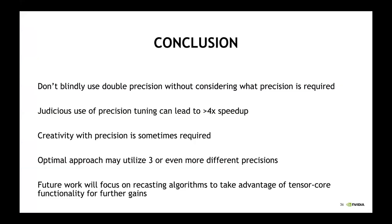To conclude: generally, don't use double precision without considering what precision is actually required in the calculation. Judicious use of precision tuning can lead to large speedups — more than 4x as we've seen here. Creativity is required, such as using integers where necessary instead of floating point, and using low precision as a storage format as opposed to just for computation. Some algorithms can utilize many more than two precisions; three or four precisions are sometimes the optimal approach depending on the calculation. Future work involves recasting many of these algorithms to take advantage of tensor core functionality on current and future GPUs, to provide a scalable solution for the future.